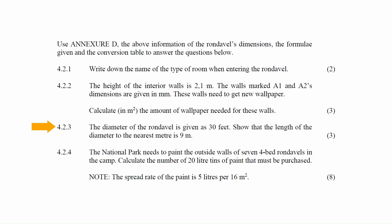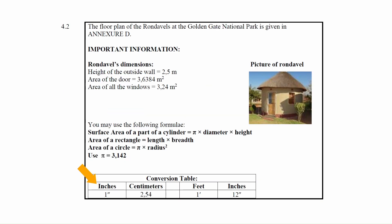In question 4.2.3, the diameter of the Rondavel is given as 30 feet, and you must show that this equals approximately 9 meters. Feet is imperial and meters is metric, so we must convert. The conversion table gives feet to inches and inches to centimeters. First, using 1 foot equals 12 inches: 30 feet equals 30 multiplied by 12, giving 360 inches.